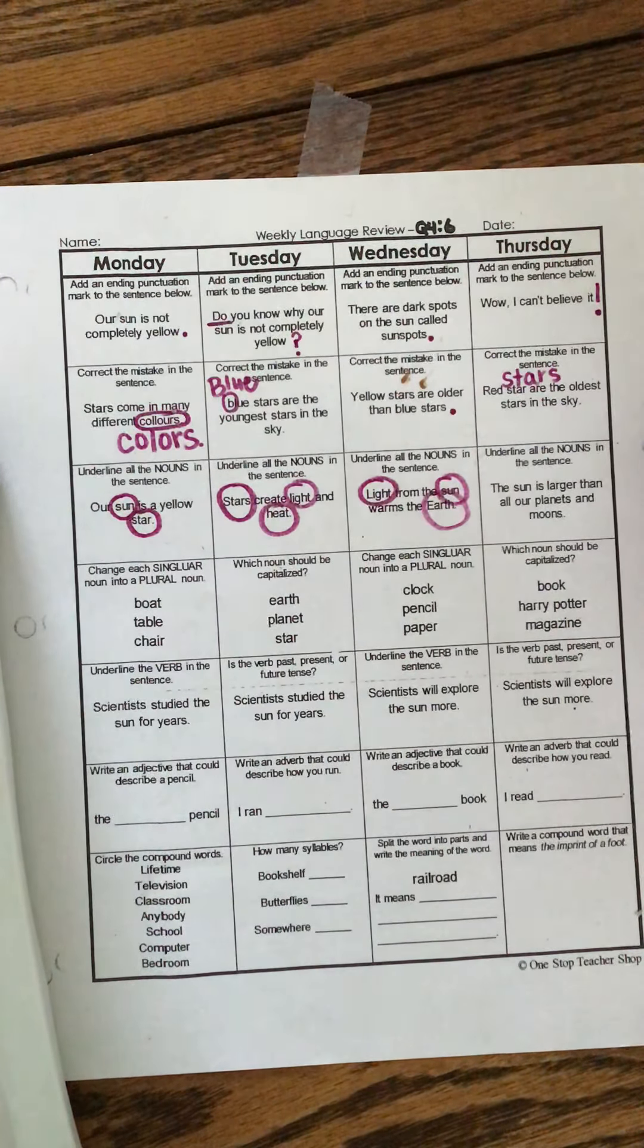Change each singular noun into a plural noun. Remember singular means single. So just one. Plural means more than one. Boat, table, chair. Boat, one boat, two boats. You just add an S right here. Table. One table. Two tables. We're gonna add an S. Chair. One chair. Two chairs. Good, good job guys.